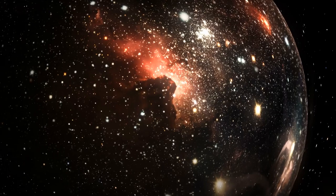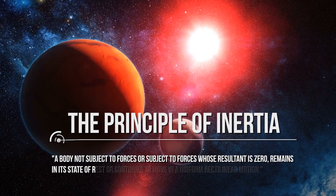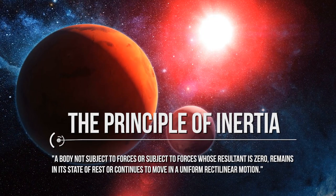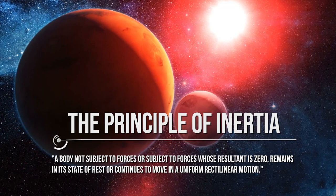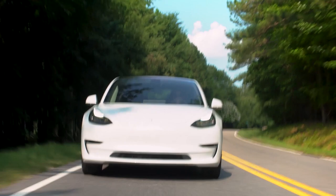Now let's go back to the three principles of dynamics, starting with the first law of dynamics, also called the principle of inertia. It states that a body not subject to forces, or subject to forces whose resultant is zero, remains in its state of rest or continues to move in uniform rectilinear motion. Inertia is essentially the ability of a body to remain in its state of motion or at rest, as long as no force is applied to it.